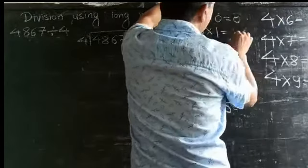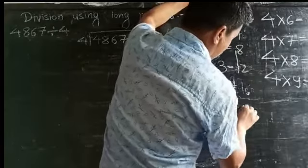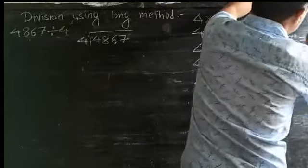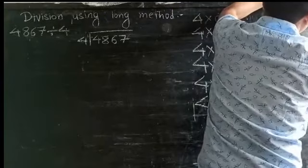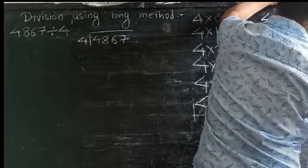4×1=4, 4×2=8, 4×3=12, 4×4=16, 4×5=20, 4×6=24, 4×7=28, 4×8=32, and 4×9=36.